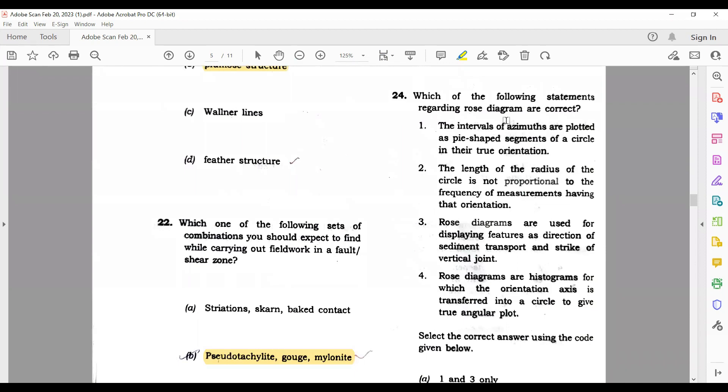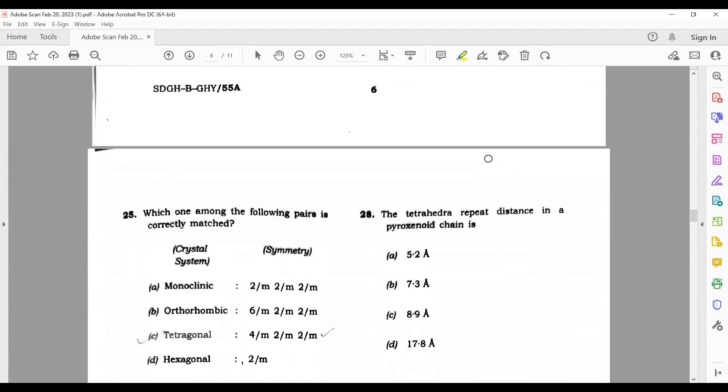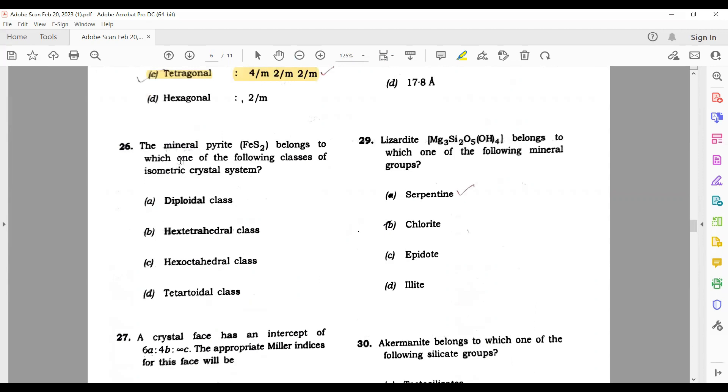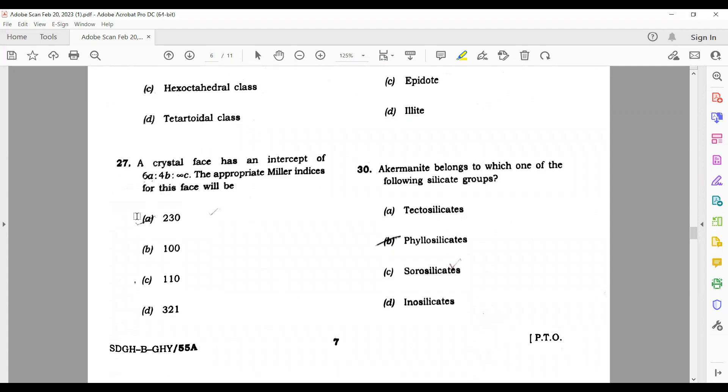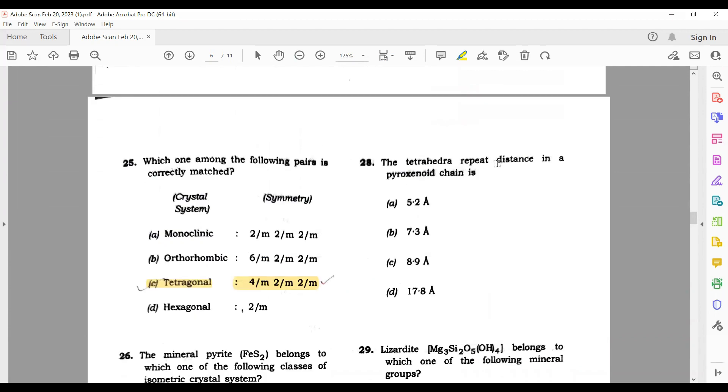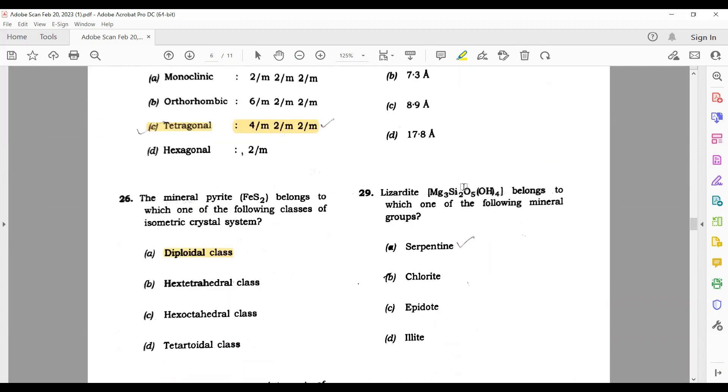Question number 24 - which are the following statement regarding Rose's diagram? I am going to skip this question. You guys can answer this also. Which one among the following pairs in the correctly matched? Monoclinic 2×m - no. Orthorhombic 6×m - no. Tetragonal is the right answer here. Next, the mineral pyrite belongs to diploidal class. The crystal 4 is 648, this is 230. Tetrahedral repeat distance - you guys can find it on your own.